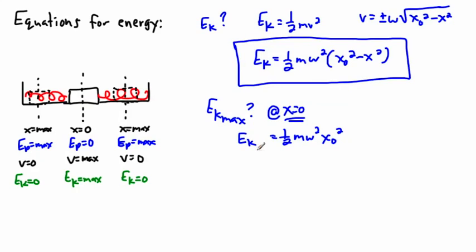So the kinetic energy maximum. So the maximum kinetic energy happens then. Remember what each of these means. Remember that m is the mass, omega is the angular frequency, x0 is the maximum displacement, and x is just your displacement at any given time.